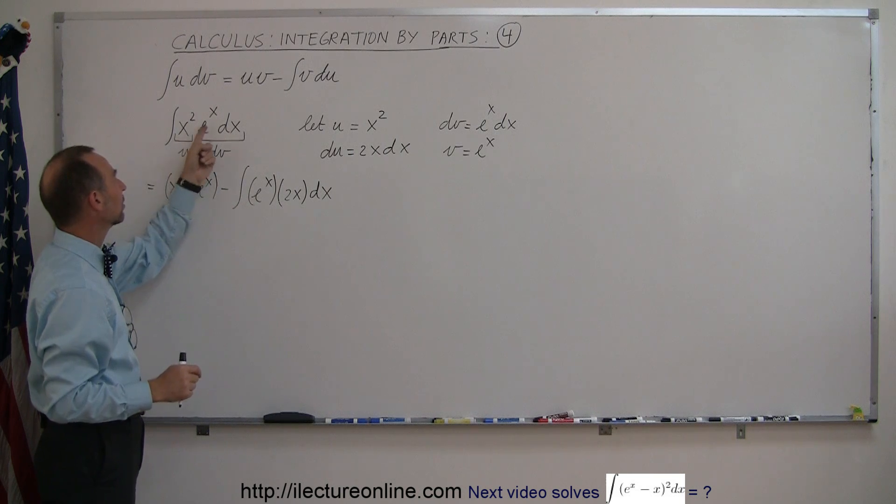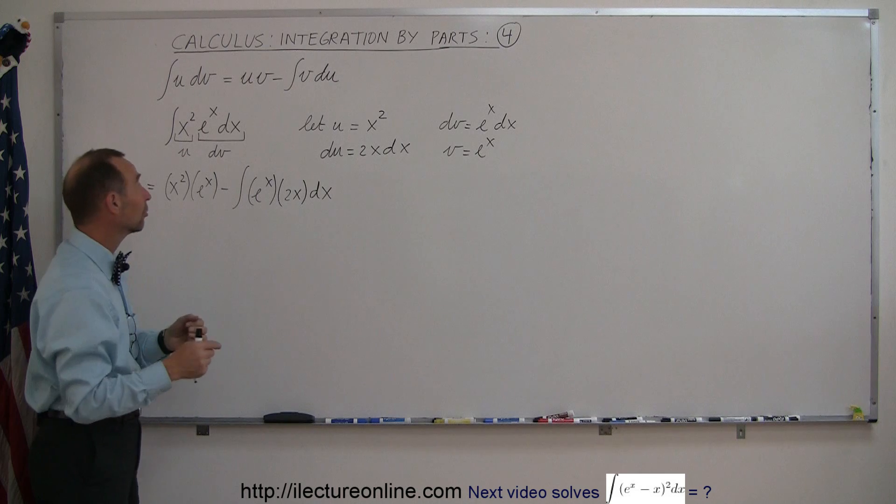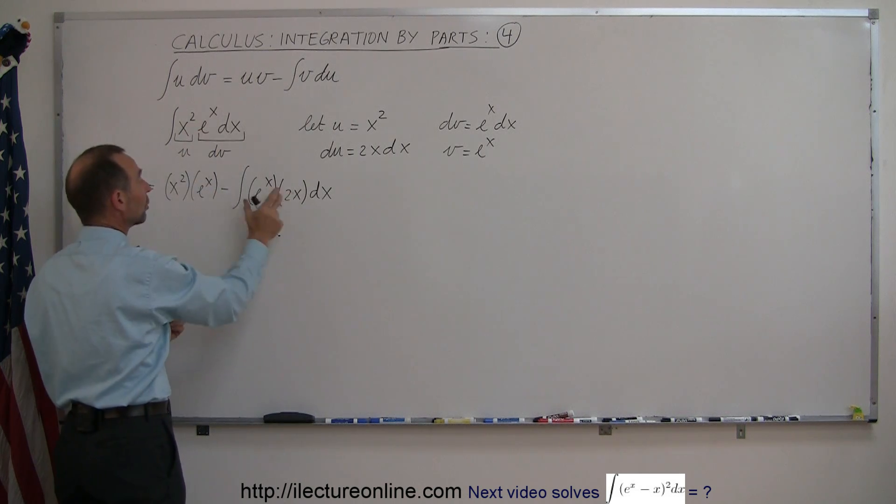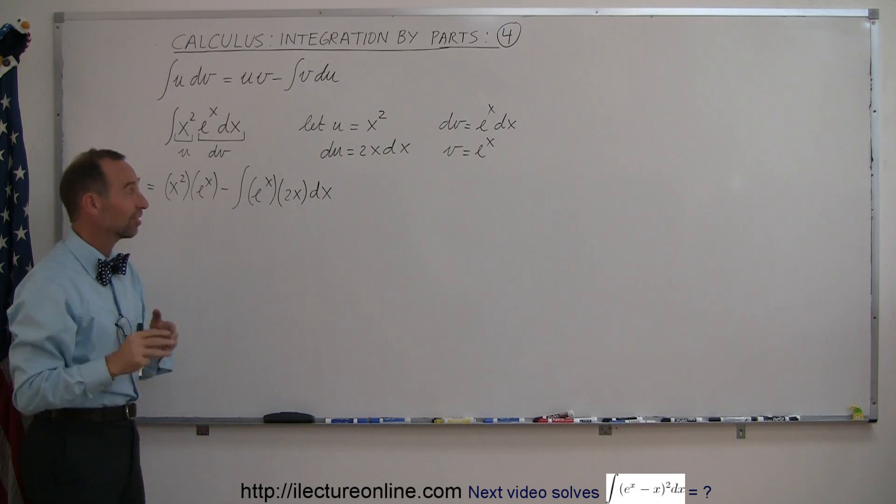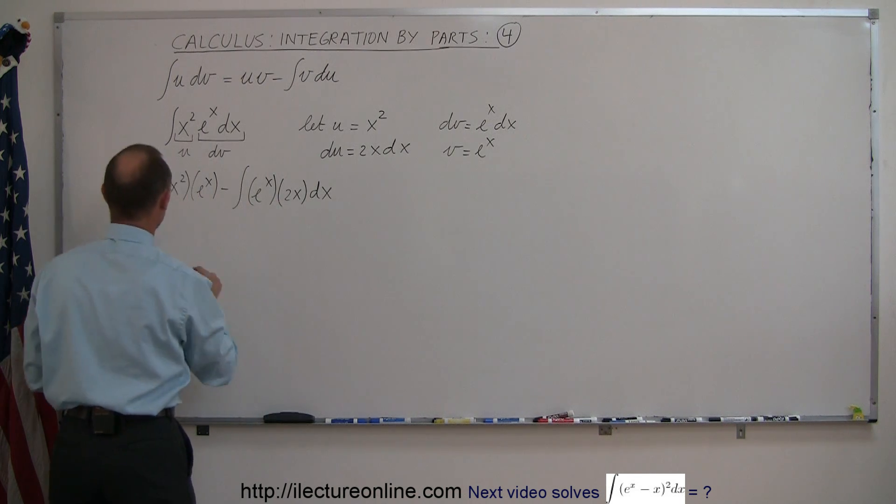Now we have, instead of x squared e to the x dx, we now have x e to the x dx. We actually managed to take x squared and turn it into an x. But we still cannot integrate it. We'll have to do this again a second time to get rid of the x.